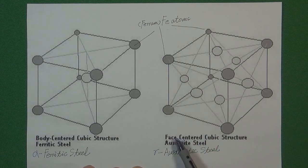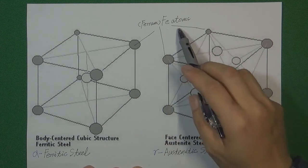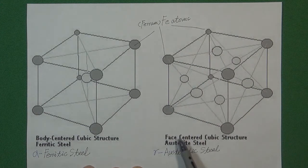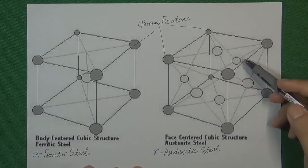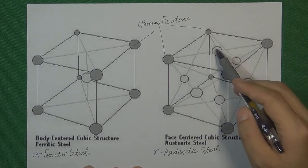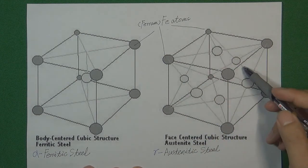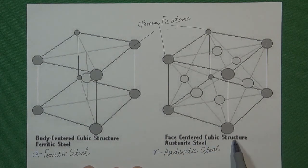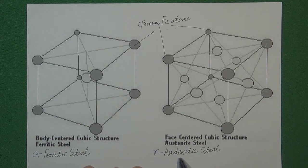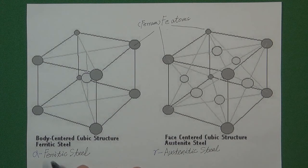Another kind of structure we call a face-centered cubic structure. That means in this kind of cubic, all those dots represent a single atom. Face-centered means this cubic, in each side — each face — contains one small atom. This kind of structure we call a face-centered cubic structure, and the scientific name is austenitic. We call this kind of structure the gamma structure. That is the basic information about austenitic and ferritic.